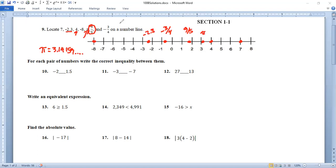For each pair of numbers, write the correct inequality between them. So we've got to find the bigger and the smaller. So negative 2 and 1.5. So negative 2 is here and 1.5 is up here. 1.5 is larger, so it looks like that. Negative 3 and negative 7. Well, negative 3 is here and negative 7 is way down there. The negative 3 is larger, so negative 3 has to be on the big side of negative 7.